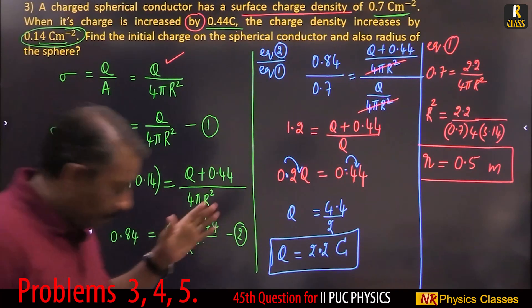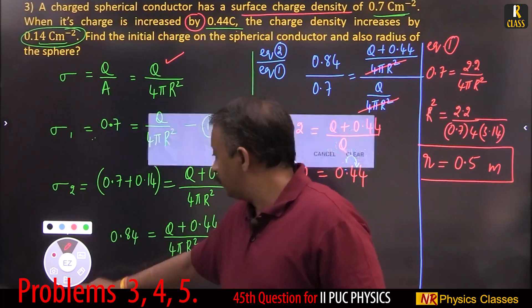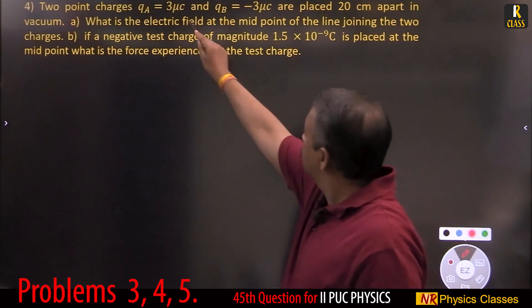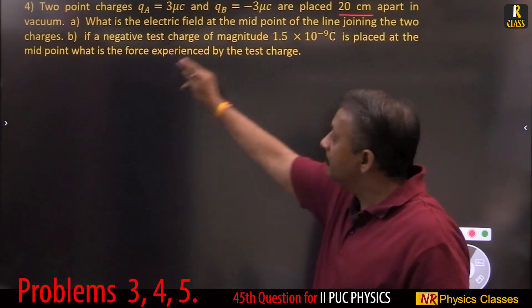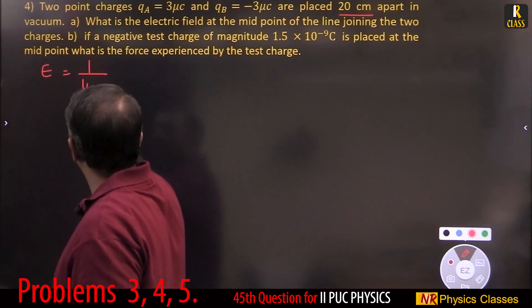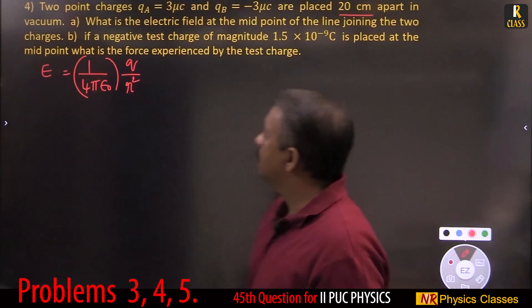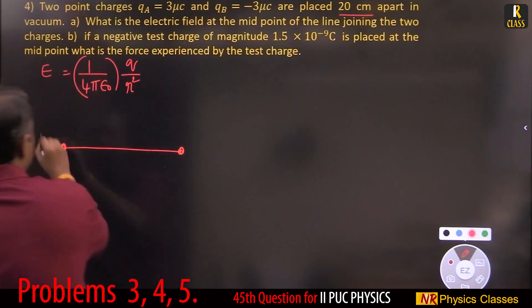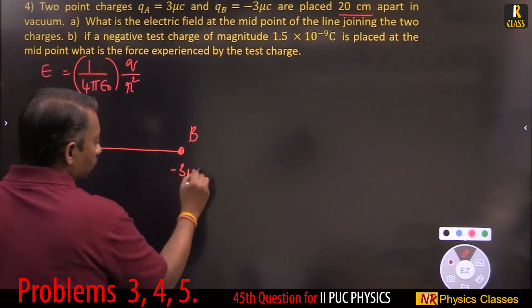The previous problem was on electric field and this problem is also on surface charge density. Now: two point charges, plus 3 and minus 3 micro coulombs, are placed 20 centimeters apart. What is the electric field at the midpoint of the line joining the charges? Charge A is plus 3 micro coulomb and charge B is minus 3 micro coulomb.